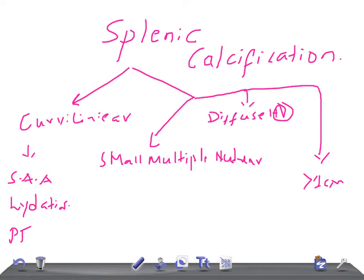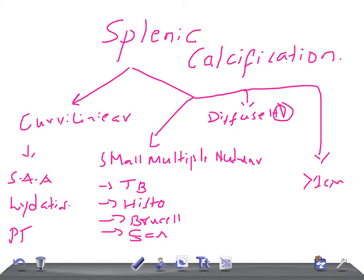For multiple small nodular splenic calcification, it can be due to tuberculosis, or infections like histoplasmosis or brucellosis, sickle cell anemia, phleboliths — which may show a small central lucency — and hemangiomas.